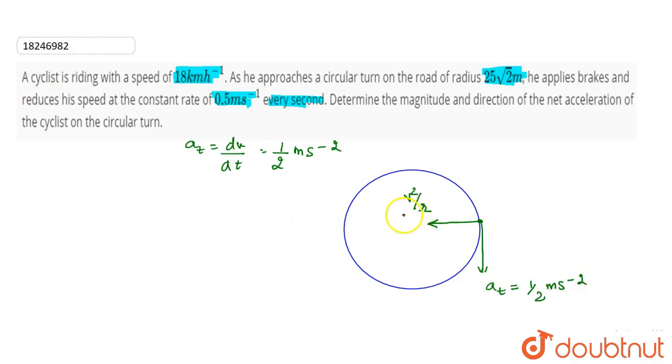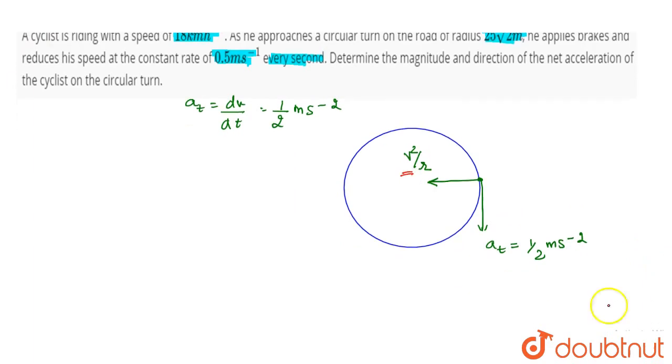Now, if we look at centripetal acceleration, it will be ac = v² by r. The velocity of 18 km per hour converts to meter per second by multiplying by 5/18. This gives velocity of 5 meter per second.